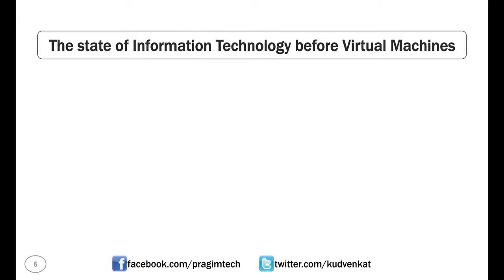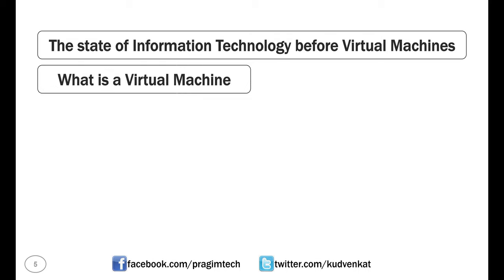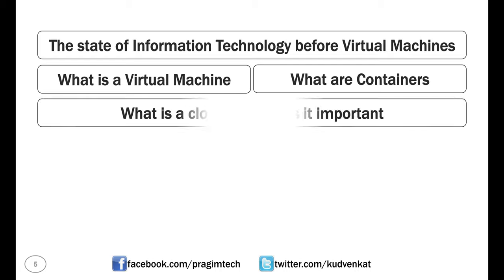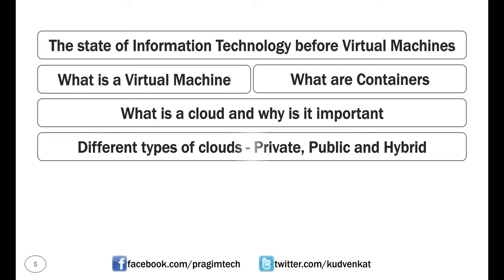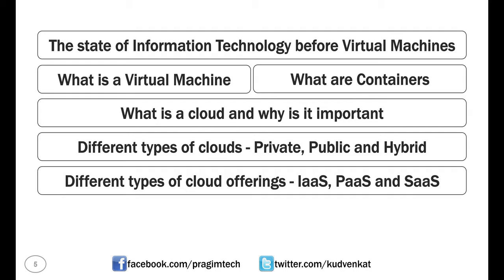The state of information technology before virtual machines. What is a virtual machine? What are containers? What is a cloud and why is it important? Different types of clouds like private, public and hybrid. Different types of cloud offerings: infrastructure as a service, platform as a service and software as a service.